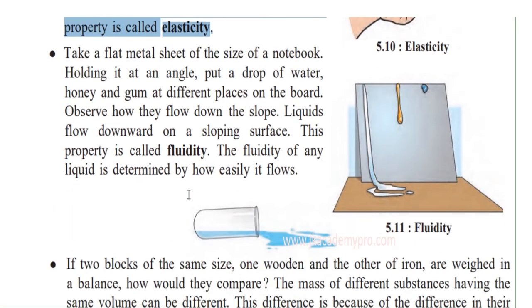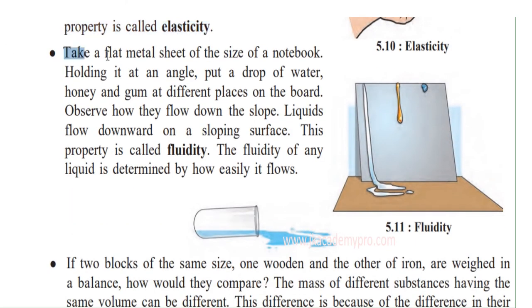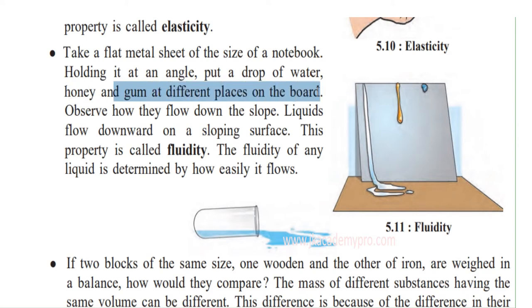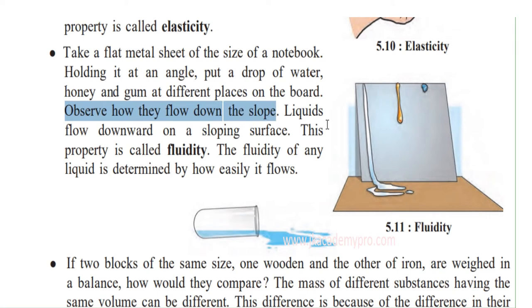Now let's do this activity. Take a flat metal sheet of the size of a notebook. Holding it at an angle, tilt it and lean it against a wall. Now put a drop of water, honey, and gum at different places on the board.